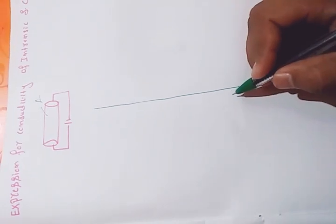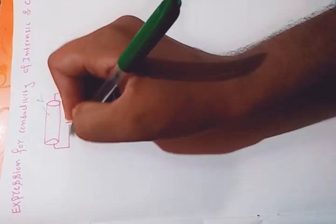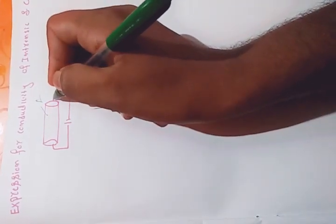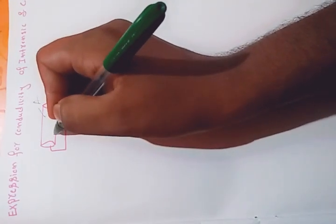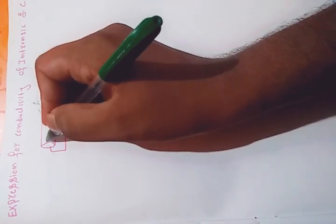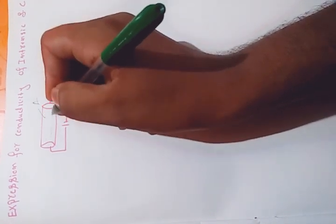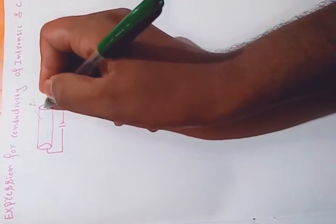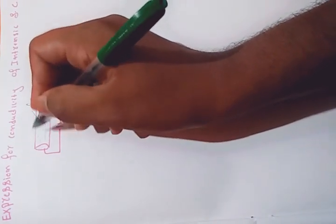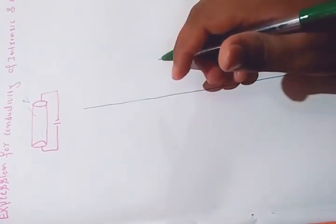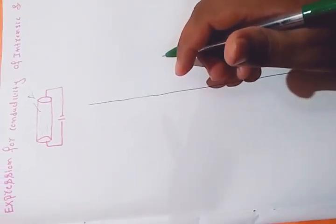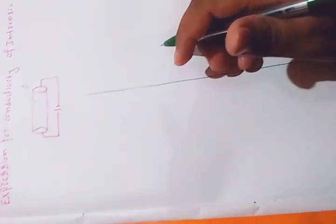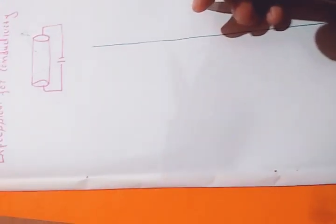The semiconductor has a cross-sectional area A. We connect it to an external power supply. Once the power supply is connected, conductivity starts. We will find out what is the expression for conductivity.